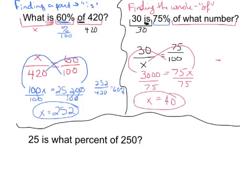So, my x value will end up equaling 40. And then I can check, is 30 over 40? Is that going to be the same thing as equal to 75 over 100 or 75%? And yes, it is. So, once again, it's the same setup. 'Is over of' equals the percentage out of 100.